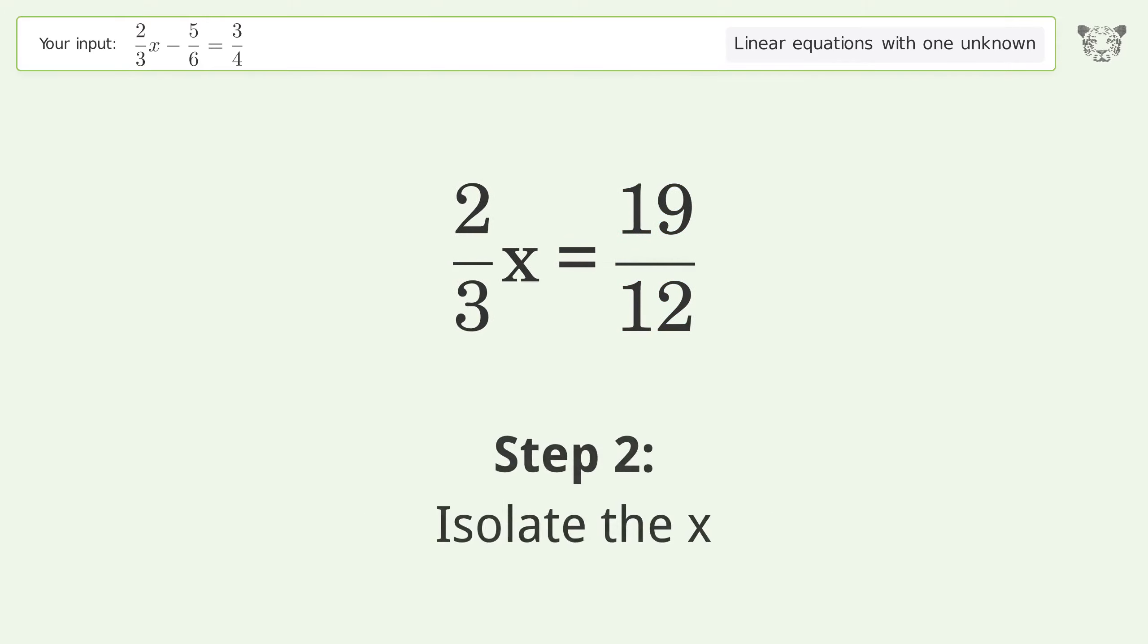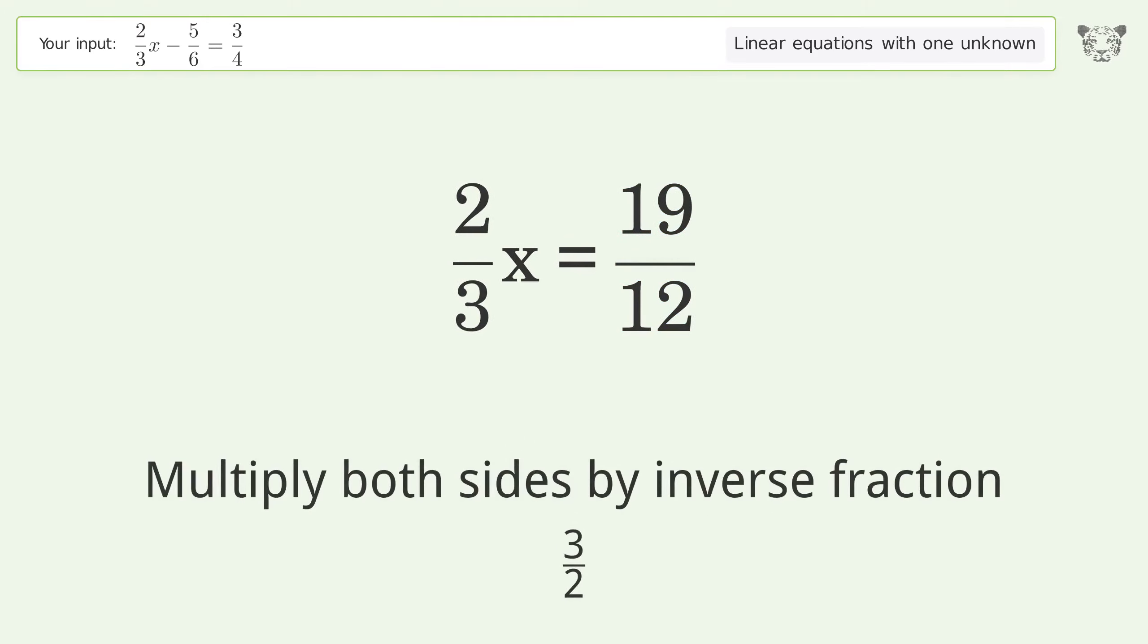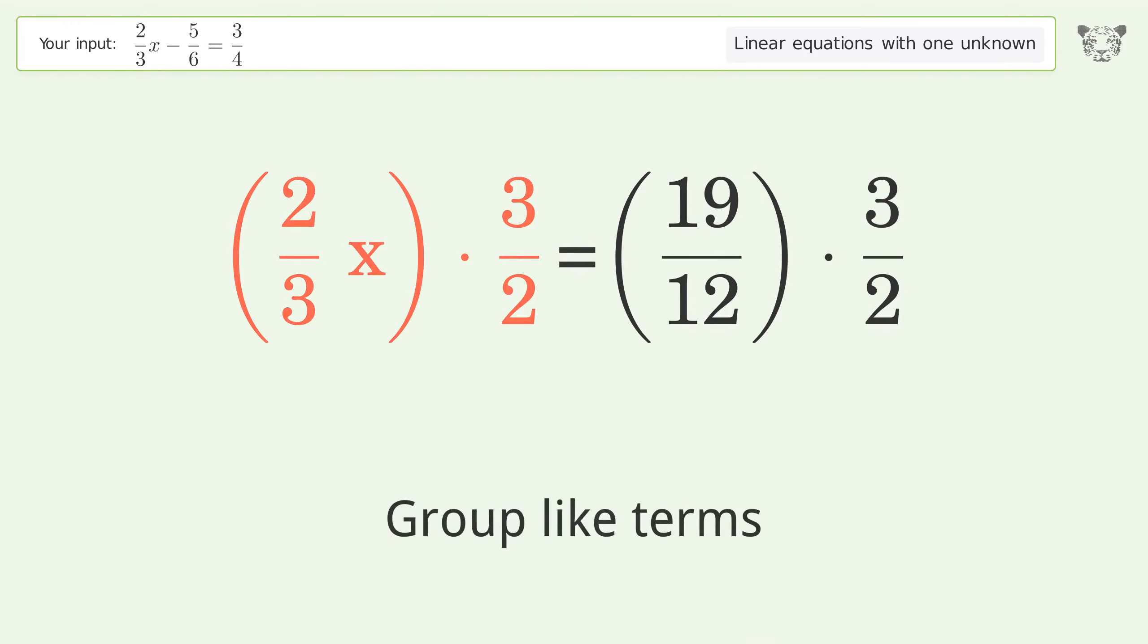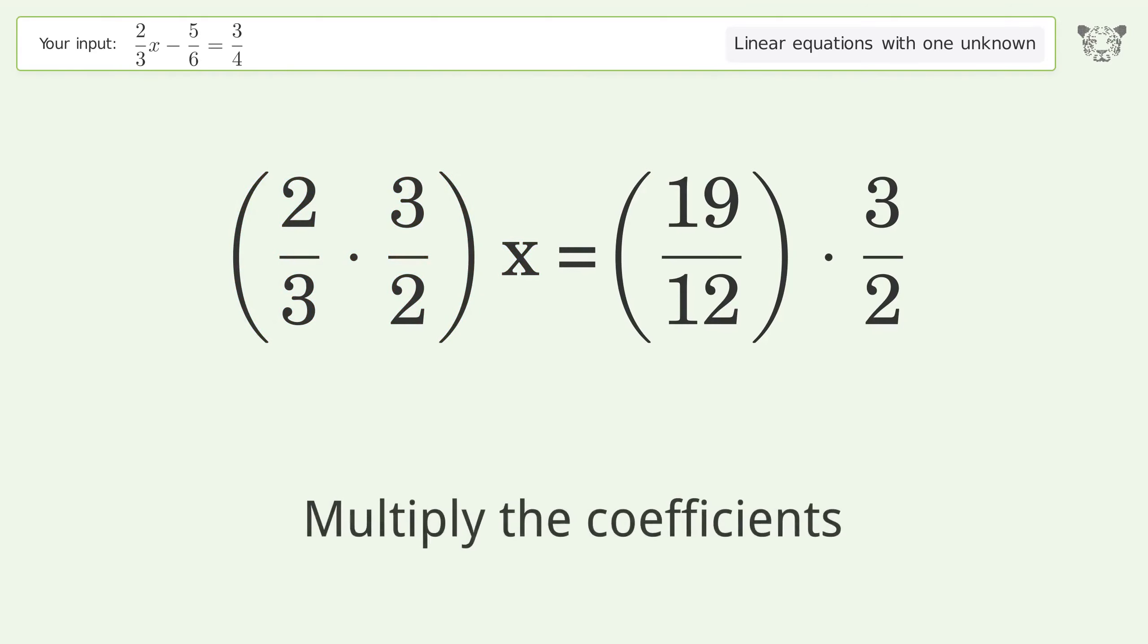Isolate the x. Multiply both sides by inverse fraction 3 over 2. Group like terms. Multiply the coefficients.